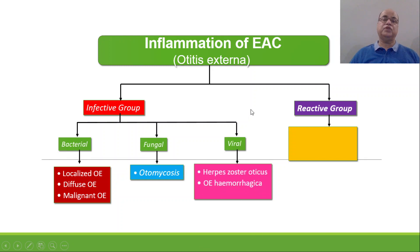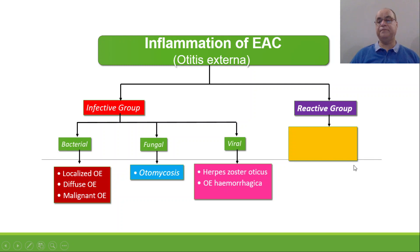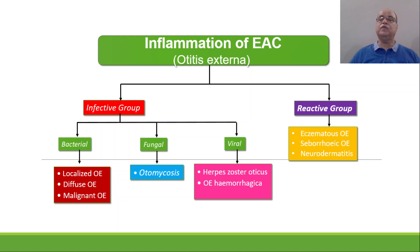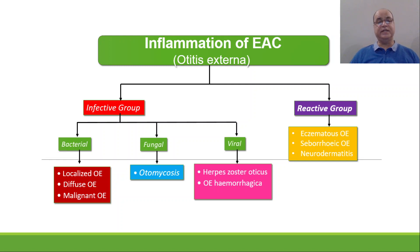If the infection is viral in its etiology, we label it as herpes zoster oticus. There is another entity called otitis externa hemorrhagica. Under the reactive group, there is a group of diseases which involve the skin and can affect the skin of the external auditory canal also. These are under the heading of the reactive group and include eczematous otitis externa, seborrhoeic otitis externa, and neurodermatitis.